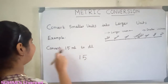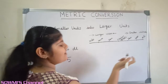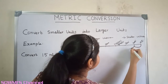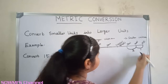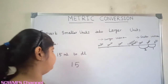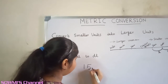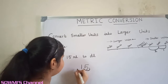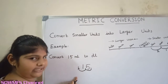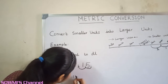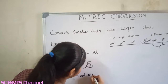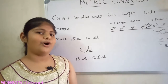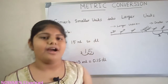Let us see one more example. Convert 15 milliliters to deciliters. First we have to count the jumps from milliliters to deciliters. There are two jumps to the left. So from the decimal point, we have to move two steps to the left. So the answer is 15 milliliters is equal to 0.15 deciliters. Hope you friends all understood how to convert metric measures.